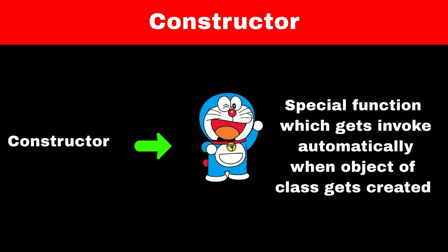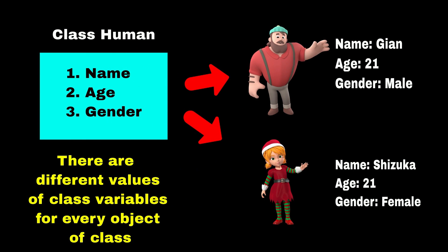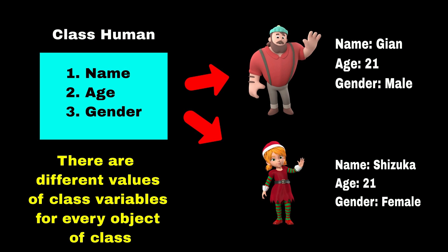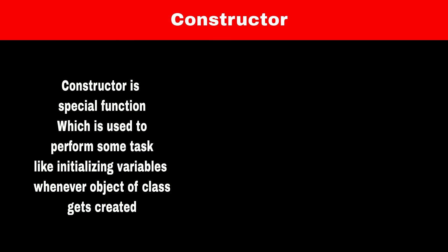In OOP, a class is just a structure. So when we create an object of a class we have to assign values to the variables of that class. For example, if we are creating an object of a human class then we have to assign values to variables like name, age, and gender. We can manually assign these values whenever an object gets created, or we can create a constructor which will automatically do this task for us.